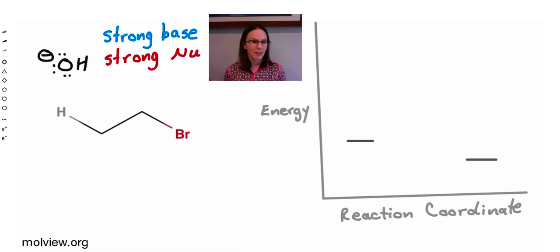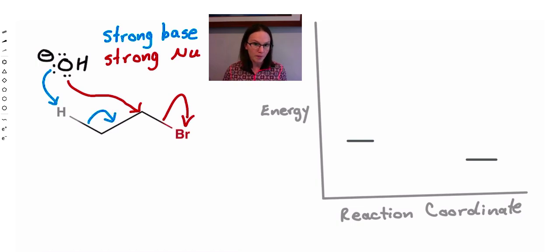So we're going to take a look at this program called MolView. That's one you can play with if you want. It's openly accessible on the web. And we're going to see the difference. So the two possible reactions then are whether or not that species, that base slash nucleophile, collides with a proton on the beta carbon to give an elimination reaction, or whether it collides directly with the alpha carbon to give a substitution product.